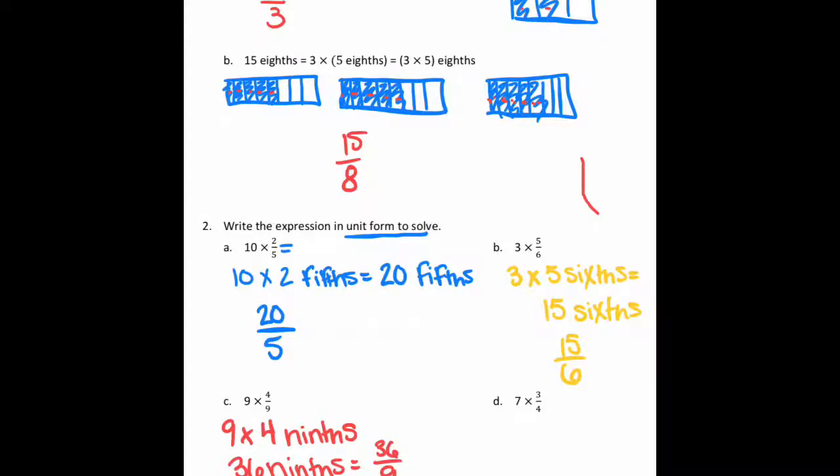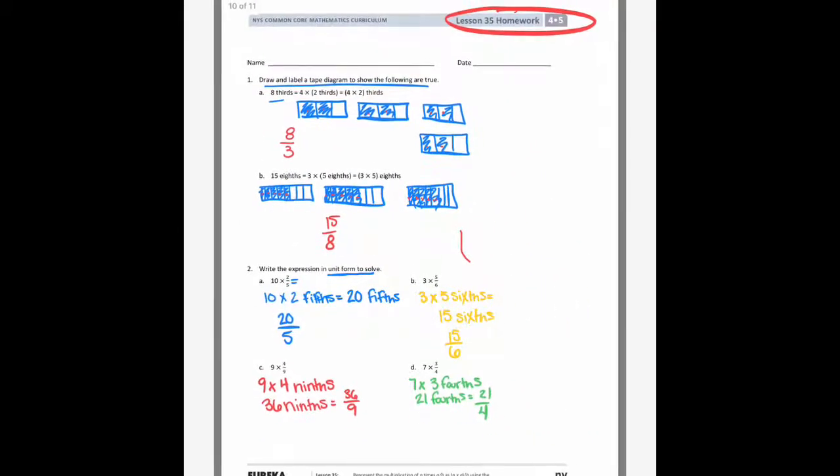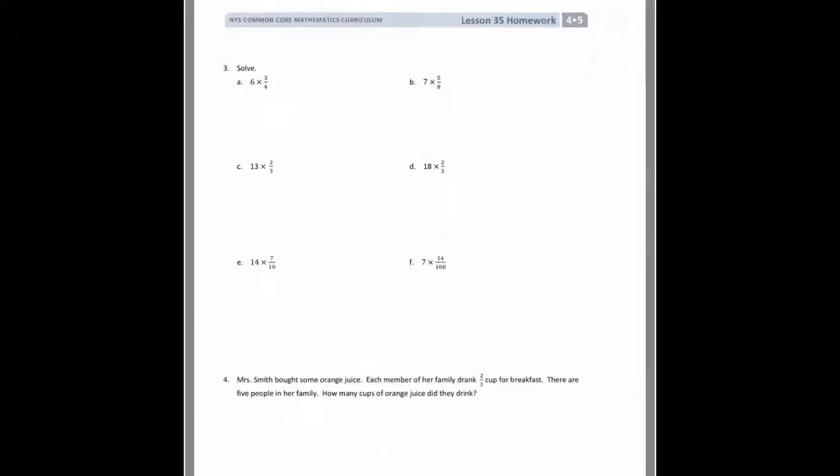On C I have 9 times 4 ninths, so I'm going to say 9 times 4 ninths. And 9 times 4 is 36, so I'm going to get 36 ninths. And I could write that as 36 over 9. And the next one I have 7 times 3 fourths. 7 times 3 fourths. So 7 times 3 will give me 21 fourths, which you could write as 21 over 4. Now you don't have to do this every time. I think they're just asking you so you get the gist of the fact that the number you're multiplying is only going to be multiplied by the numerator.